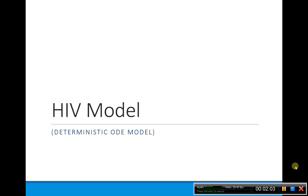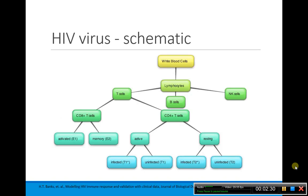The first model we're going to talk about is the HIV model. For every single one of the models I have references where you can find more information. I really just want to give you an overview of what you might see and how you might go about modeling something deterministically or stochastically. This is a schematic of the HIV virus. Whenever you're trying to model something, it's easier to draw a picture first. This model was done by Banks and others — Dr. H.T. Banks at North Carolina State University.